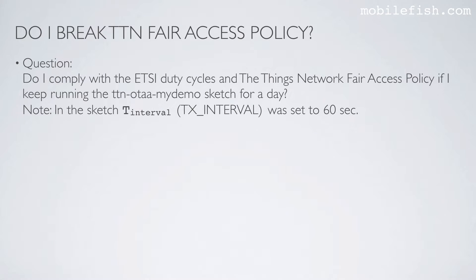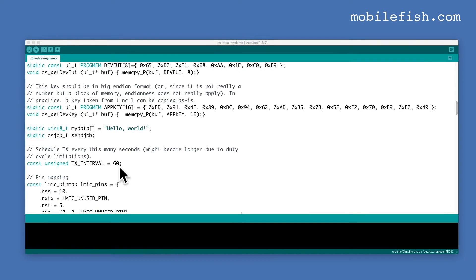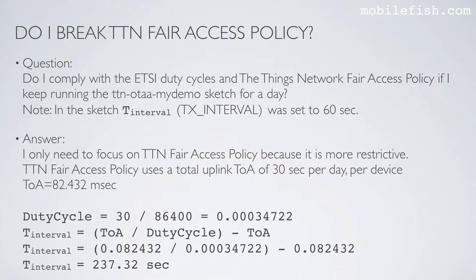So the question was: do I comply with the ETSI duty cycles and the Things Network Fair Access Policy if I keep running the TTN OTA My Demo sketch for a day? Note that in the sketch the transmit time interval was set to 60 seconds. I only need to focus on the Things Network Fair Access Policy because it is more restrictive. The Fair Access Policy uses a total uplink time on air of 30 seconds per day per device. The time on air was 82.432 milliseconds.